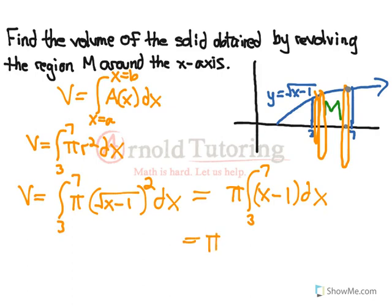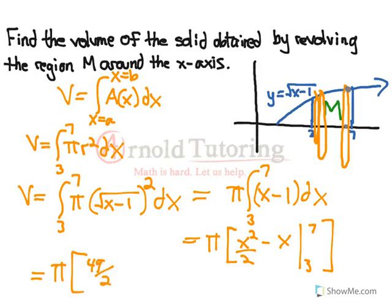It's pi times x squared over 2, that's the integral of x, minus x, evaluated from 3 to 7. This gives us pi times 49 over 2 minus 7, minus 9 over 2 minus 3.